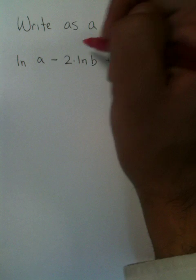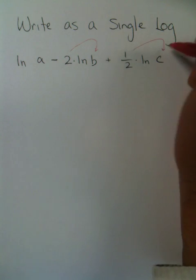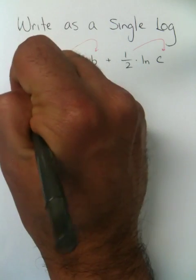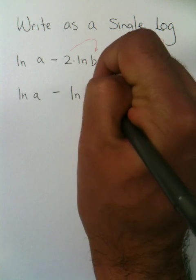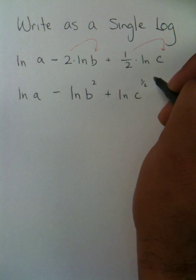So what you're going to end up doing is taking this 2 and bringing it and making it a power above. Same thing with this 1 half. So you're going to have the natural log of a minus the natural log of b squared now, plus the natural log of c raised to the 1 half power.